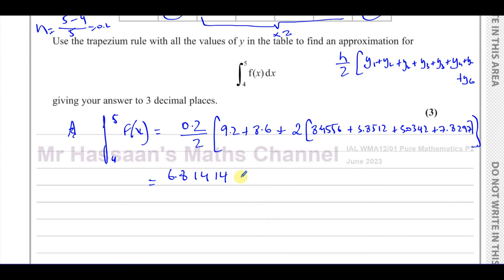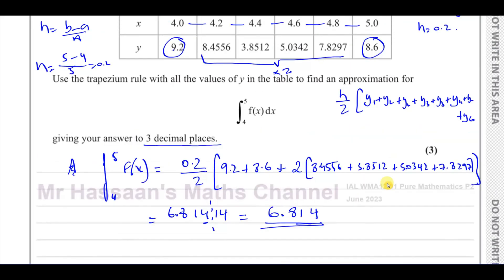So now we have to round the answer as required in the question, and as we can see, it tells us to round to three decimal places. So the third decimal place stops here. So you're going to have 6.814, that's the answer. Be careful not to write three significant figures by mistake, that would be 6.81, this is three decimal places, so 6.814, and that gives you the three marks for this question.